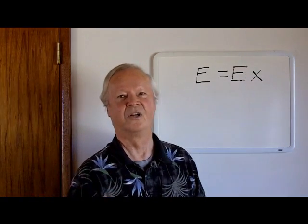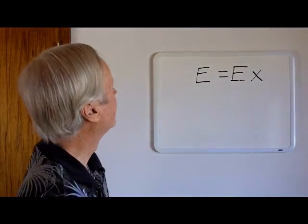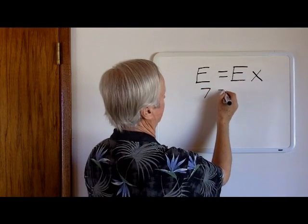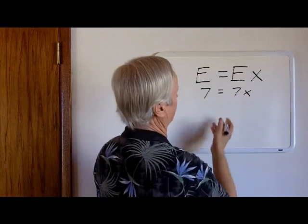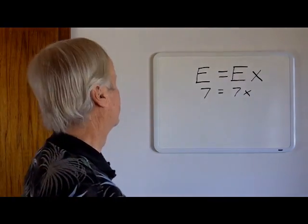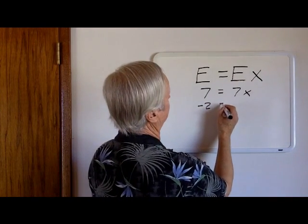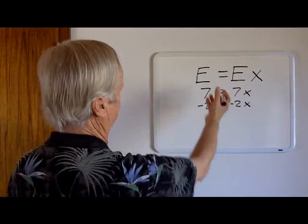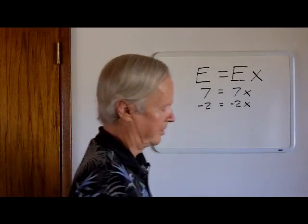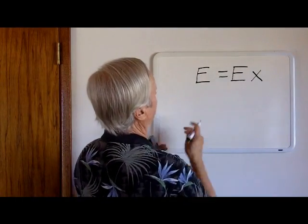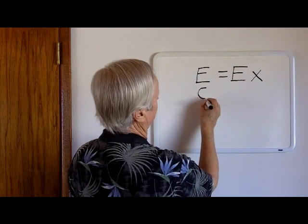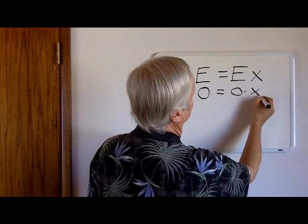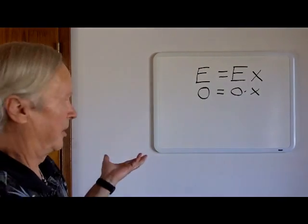And let's ask ourself what is the value of x. Well, I would say most of the time x would be equal to 1. For example, let's say E is equal to 7 - 7 equals 7x, solving for x we get 1. Let's say that E is equal to minus 2 - minus 2 equals minus 2x, solving for x we get 1. But what happens if E is equal to 0? 0 equals 0 times x.